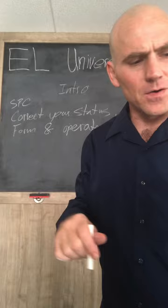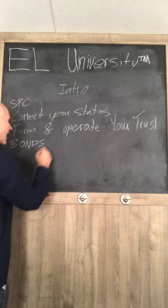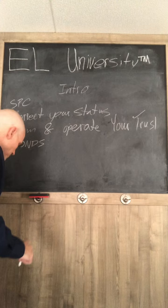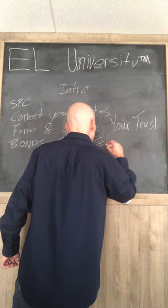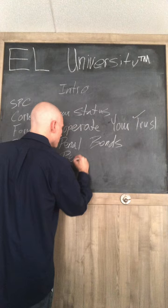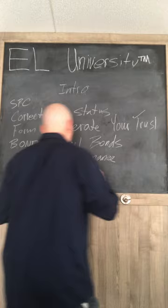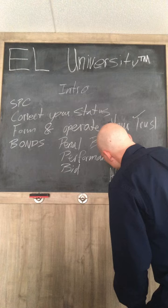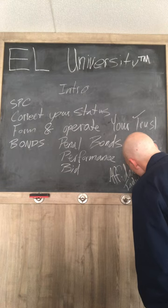We're also going to cover many other areas. For example, we're going to cover bonds. The bonds that we cover are going to have to do with all bonds, but primarily with penal bonds, performance bonds, bid bonds, and affidavits of individual surety.